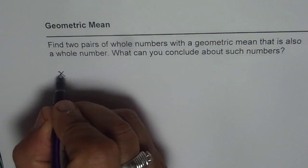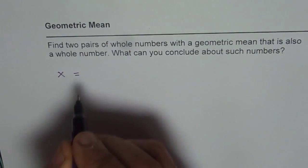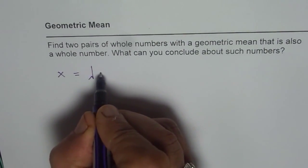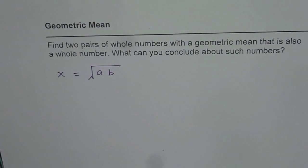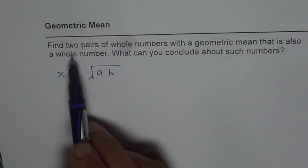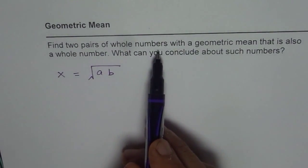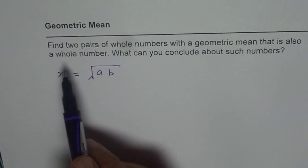When we say geometric mean, let's say x is a geometric mean of two numbers, then x should be equal to square root of a times b. That is the definition of geometric mean. Now the question is, we need to find two pairs of whole numbers with geometric mean that is also a whole number.